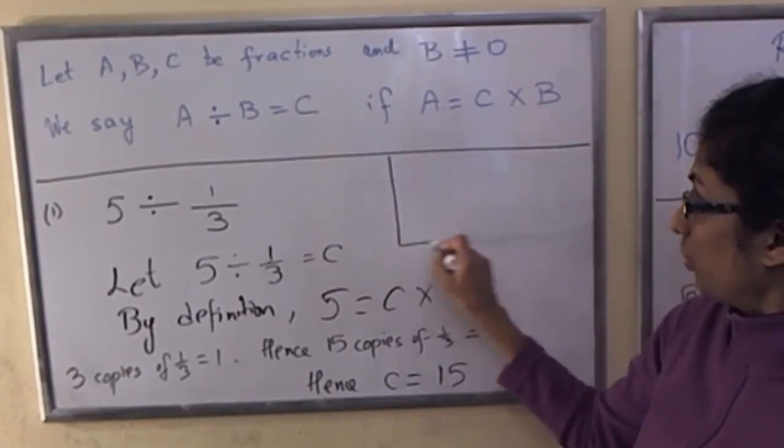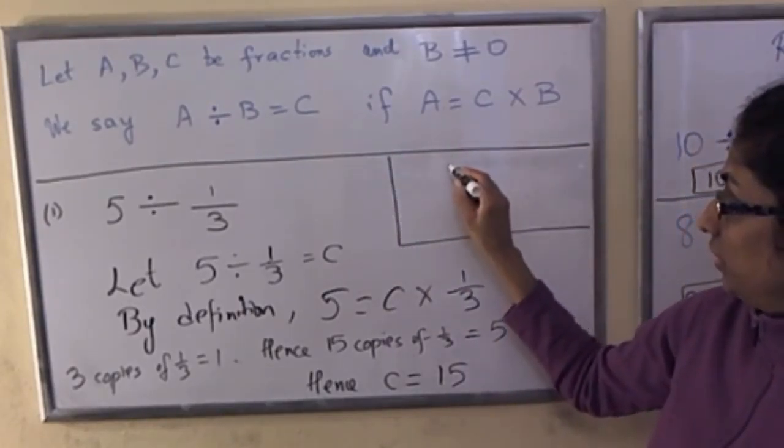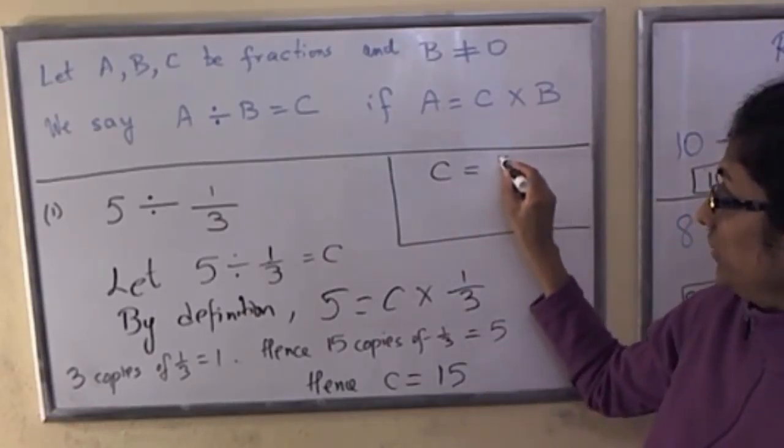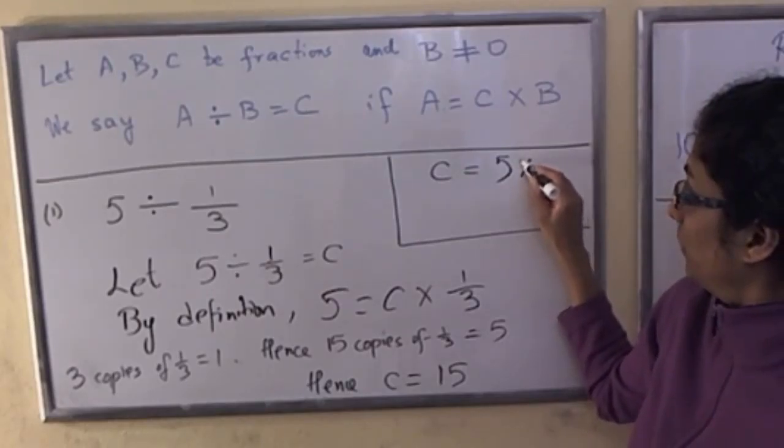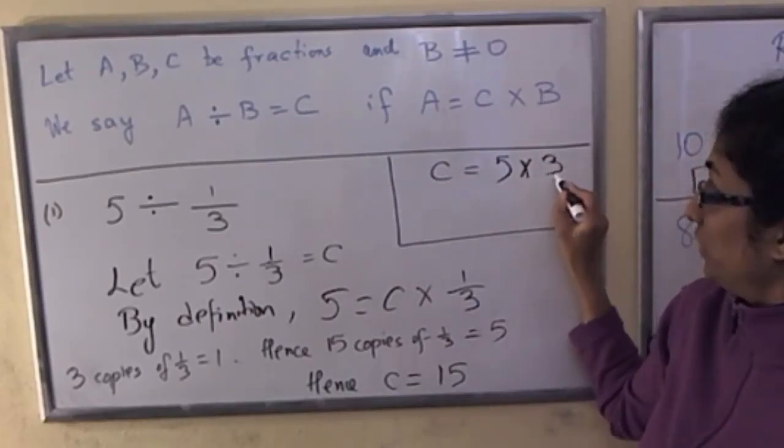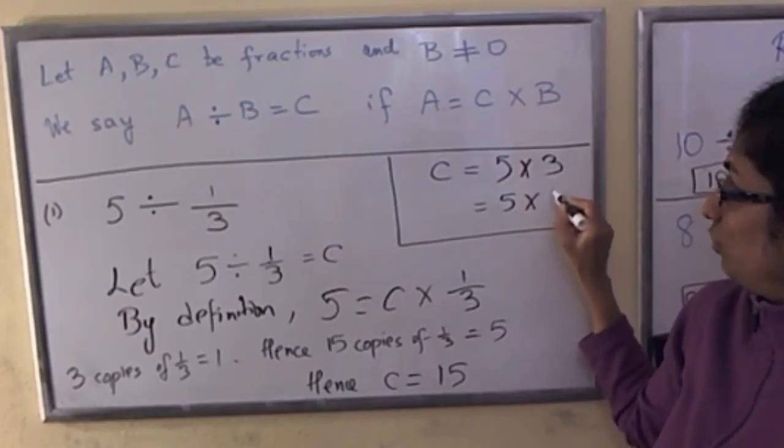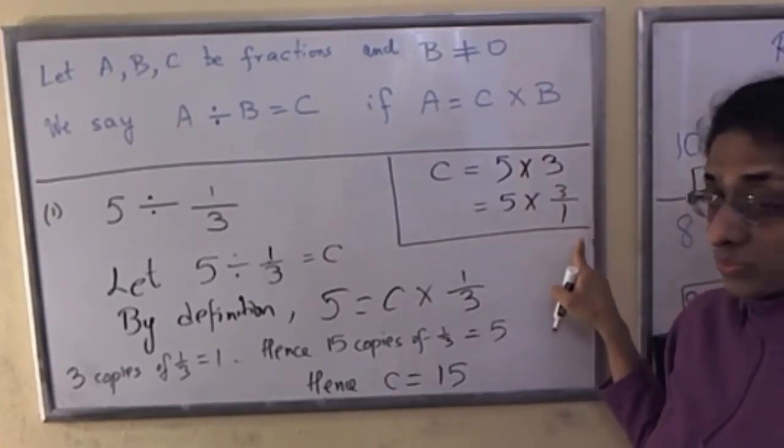Also, one quick observation. Notice, c is really 5 times 3. And we can also think of it as 5 times 3 over 1. This is simply an observation.